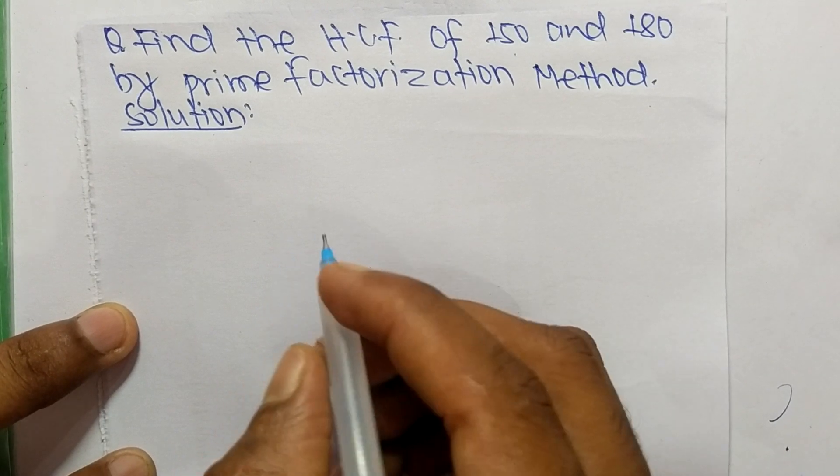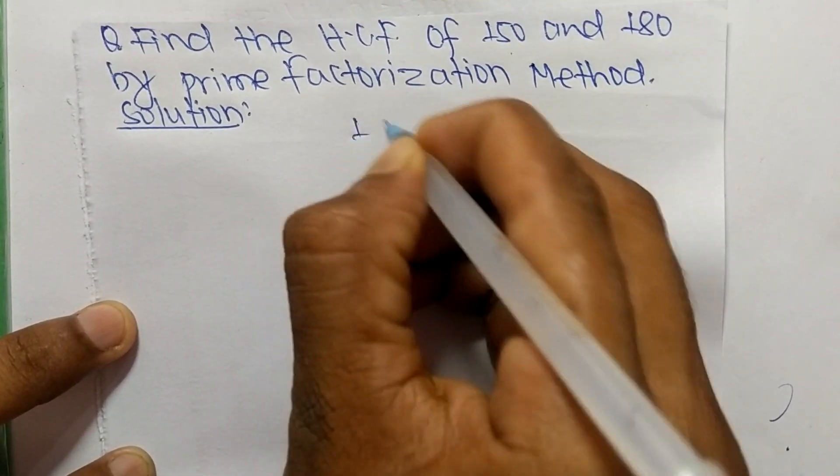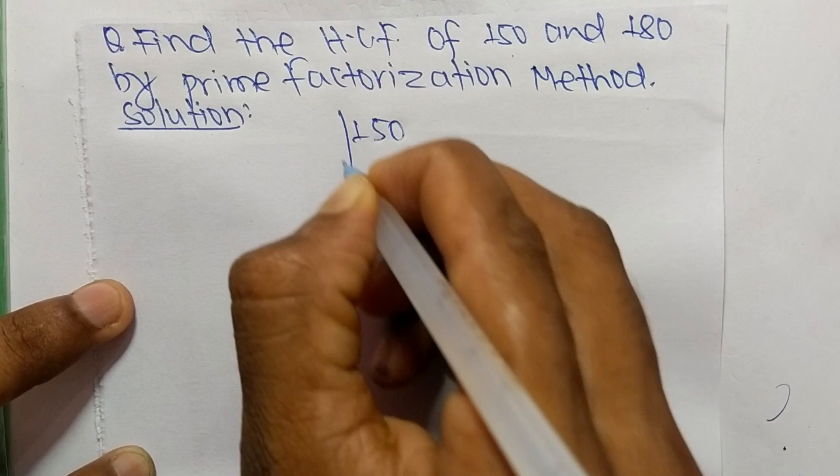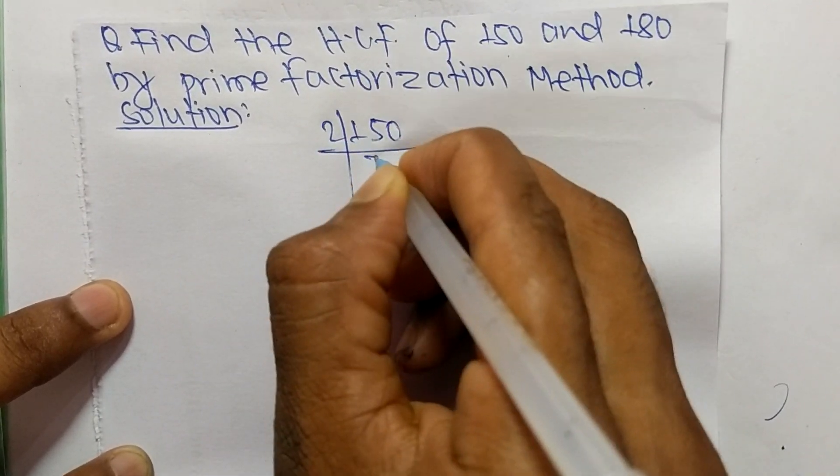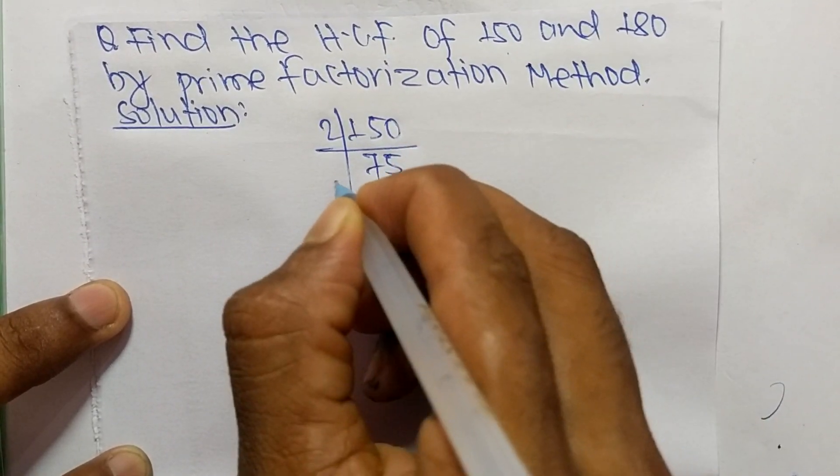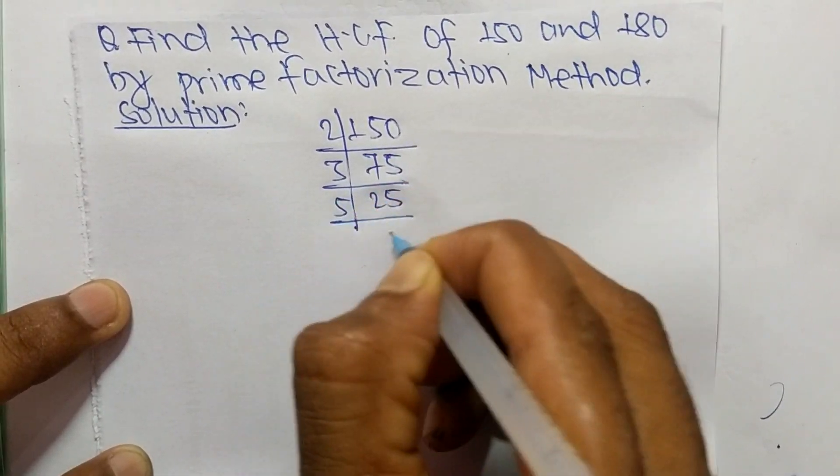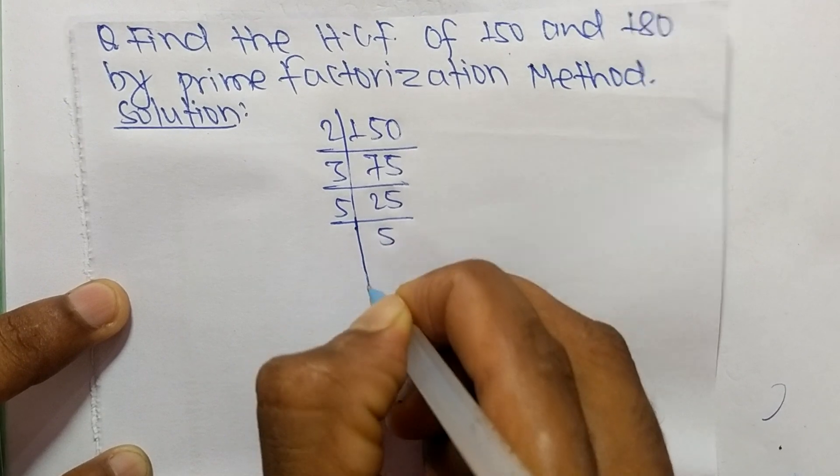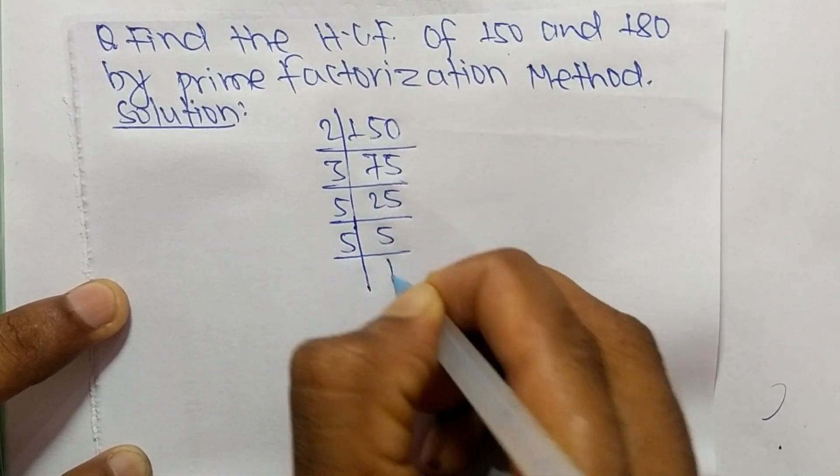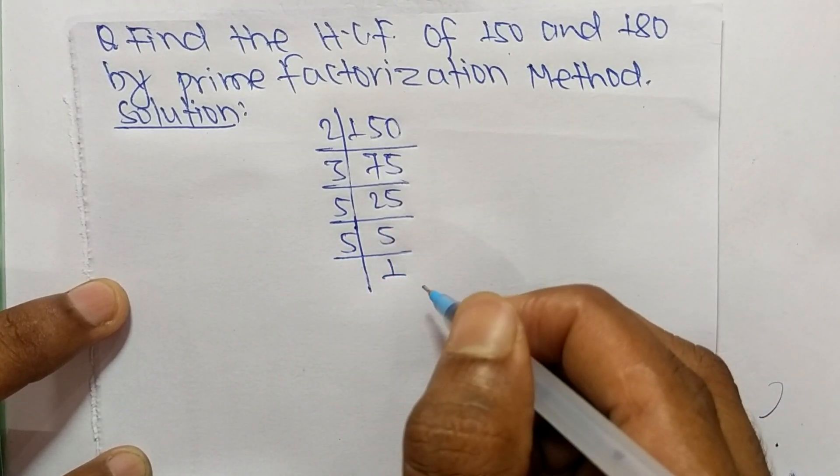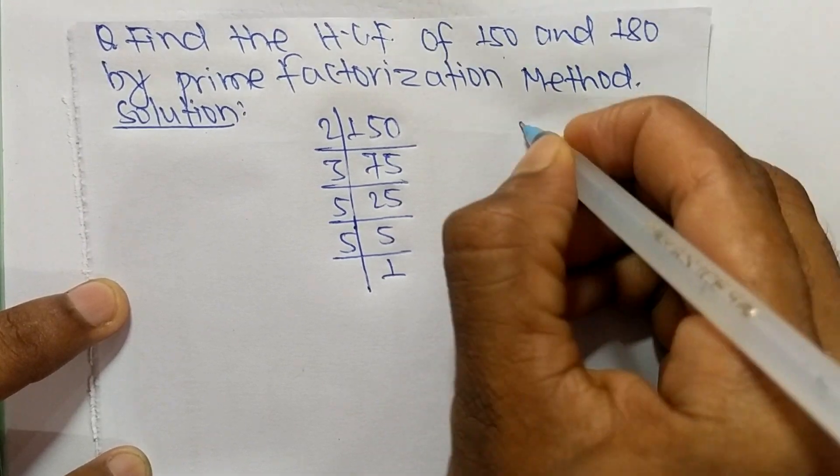First, we find the prime factors of 150. It is 2 times 75 equals 150, 3 times 25 equals 75, 5 times 5 equals 25, and 5 times 1 equals 5.